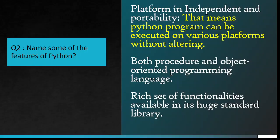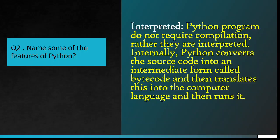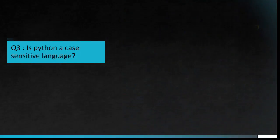Both procedure and object-oriented programming language. Rich set of functionalities available in its huge standard library. Interpreted - Python programs do not require compilation, rather they are interpreted. Internally, Python converts the source code into an intermediate form called bytecode and then translates this into the computer language and then runs it.